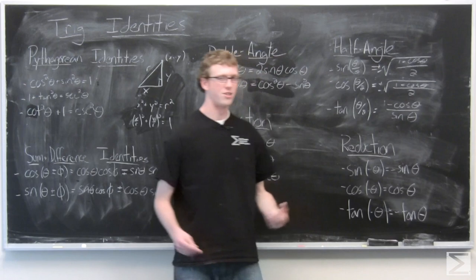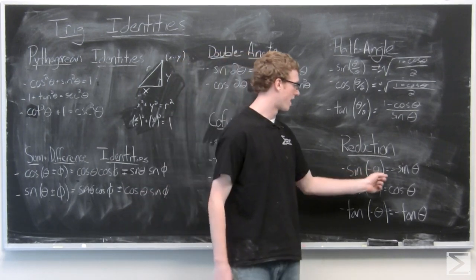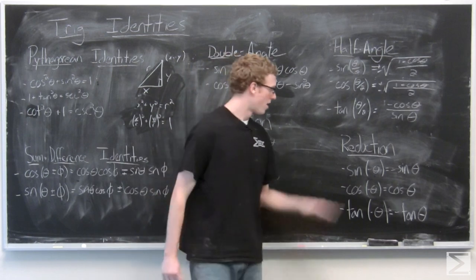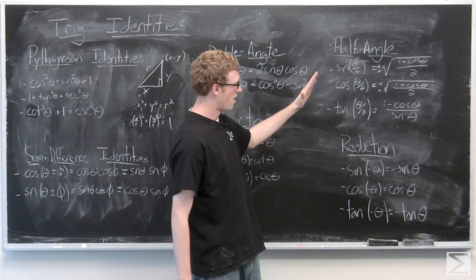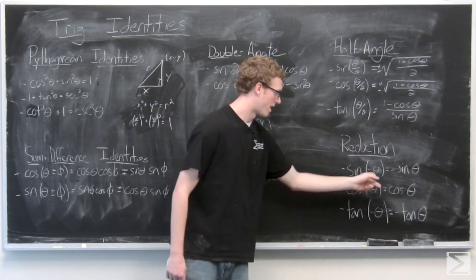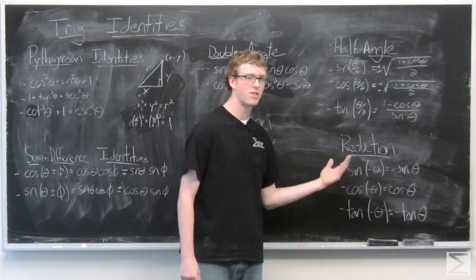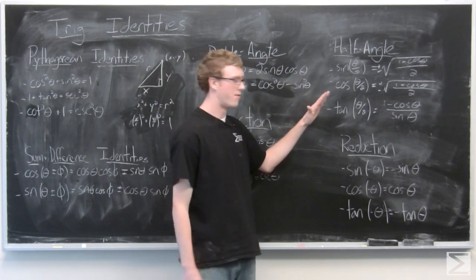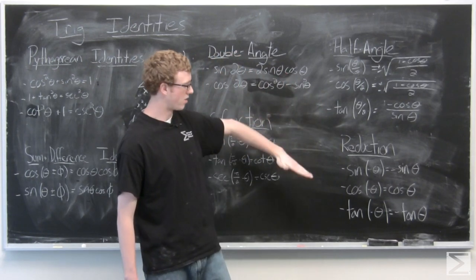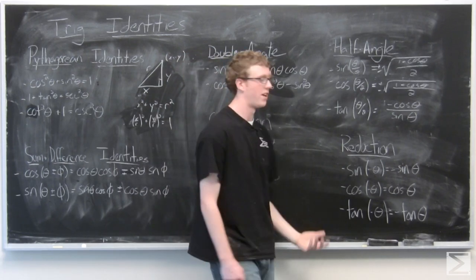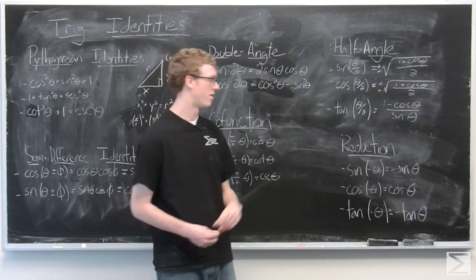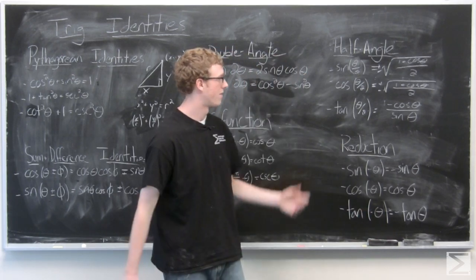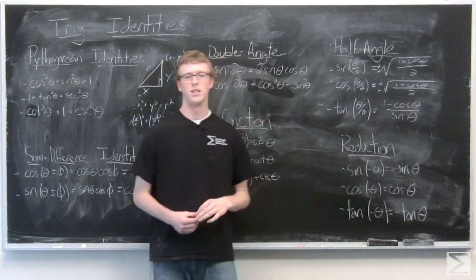Last, we have the reduction identities, which are pretty easy to visualize. Sine(−θ) = −sine θ: if you think of an angle in the first quadrant, taking the negative angle sends it below the x-axis, so the sine becomes negative. Cosine(−θ) = cosine θ: the negative angle corresponds to quadrant four, where cosine is still positive. Tangent of negative theta follows a similar case to sine.